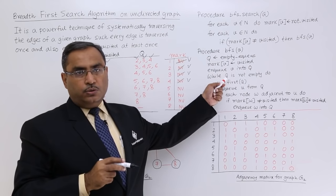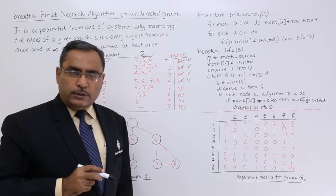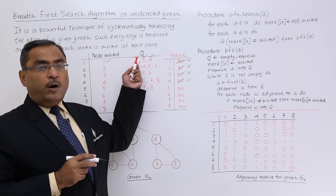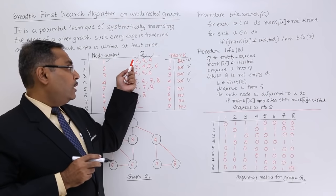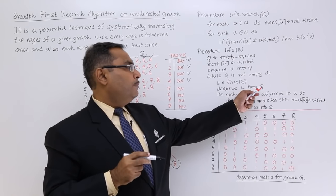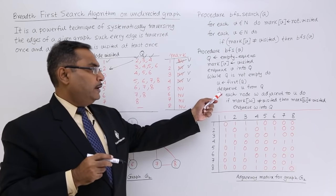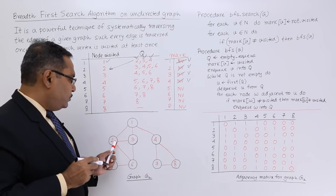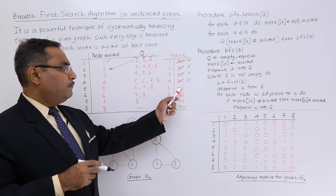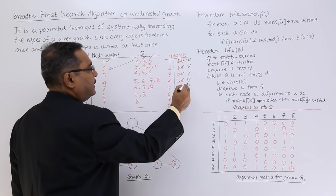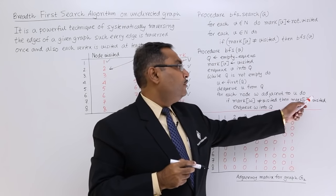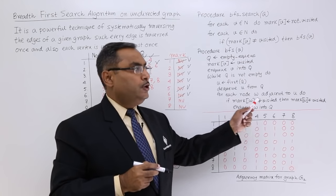Q is not empty, so the while loop continues. U is equal to first of Q. Q is a first-in first-out data structure, so the first item inserted was 1 and it was deleted; the next item inserted was 2, so 2 is now dequeued and becomes U. Checking neighbors of 2: nodes 5 and 6 are not visited, so 5 is inserted and marked visited, 6 is inserted and marked visited.